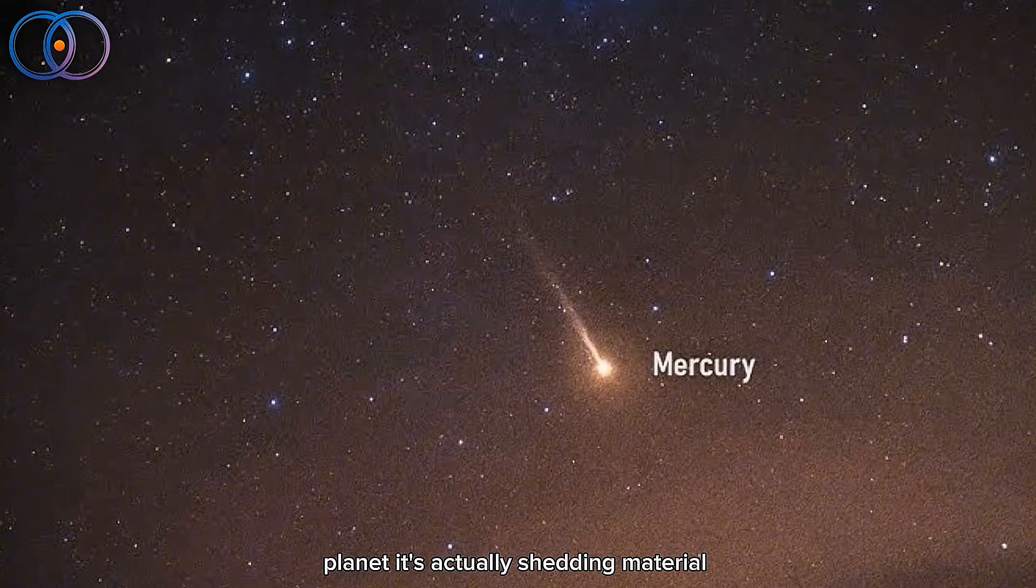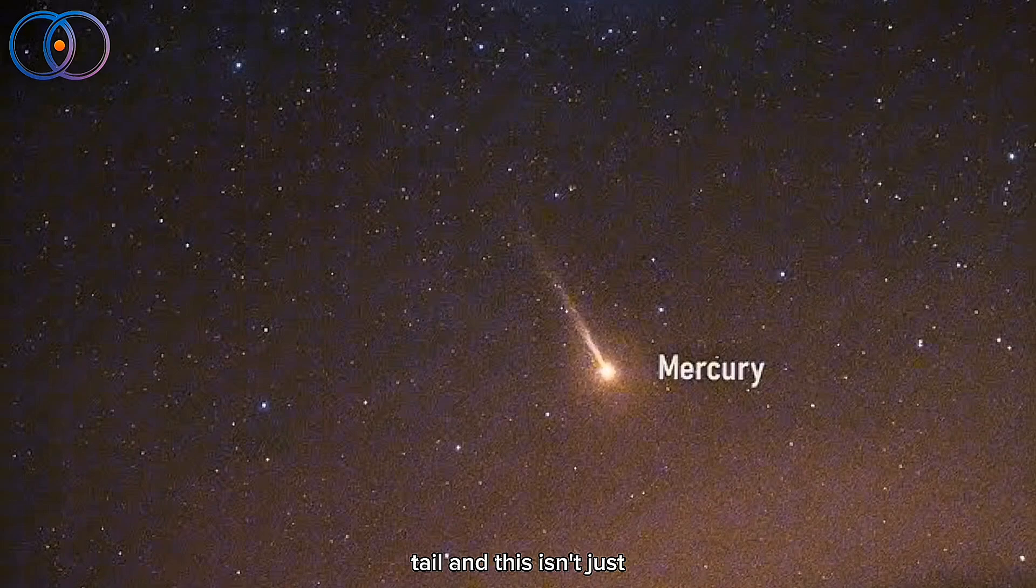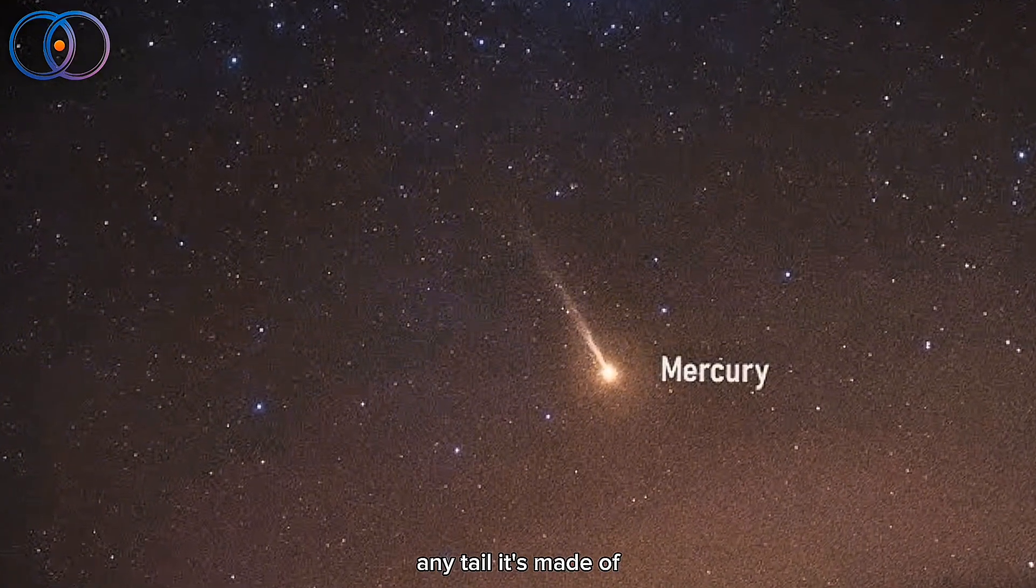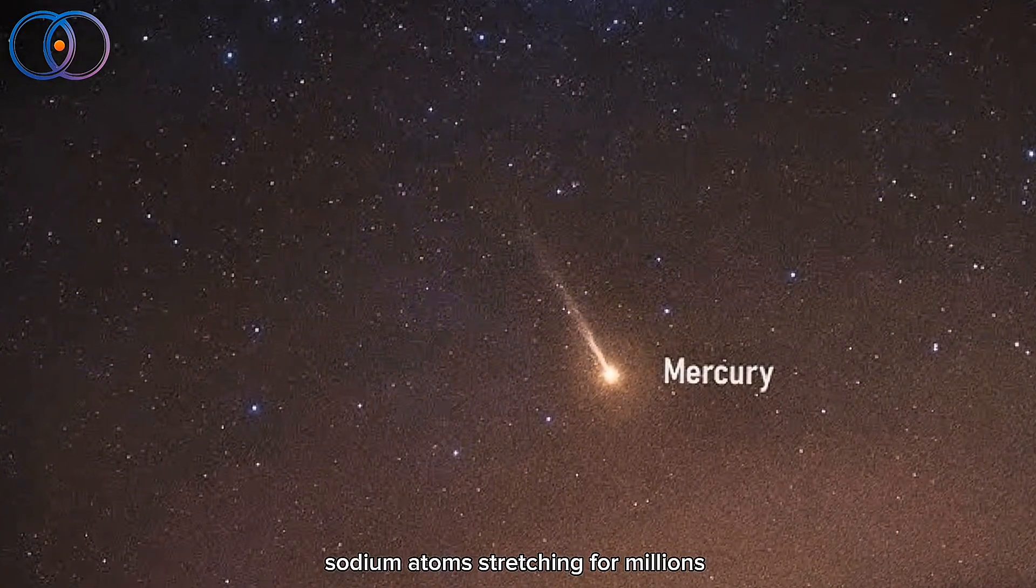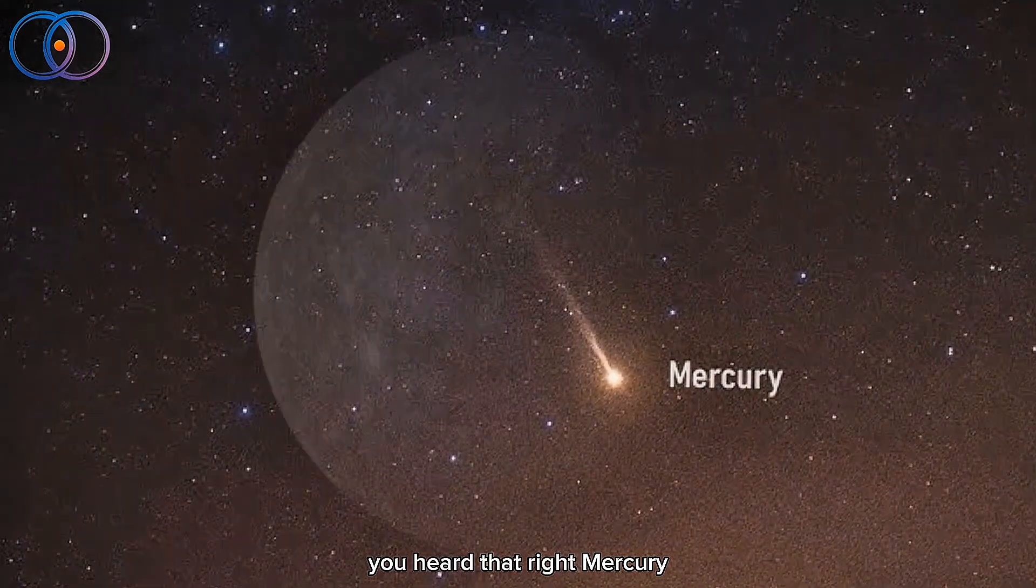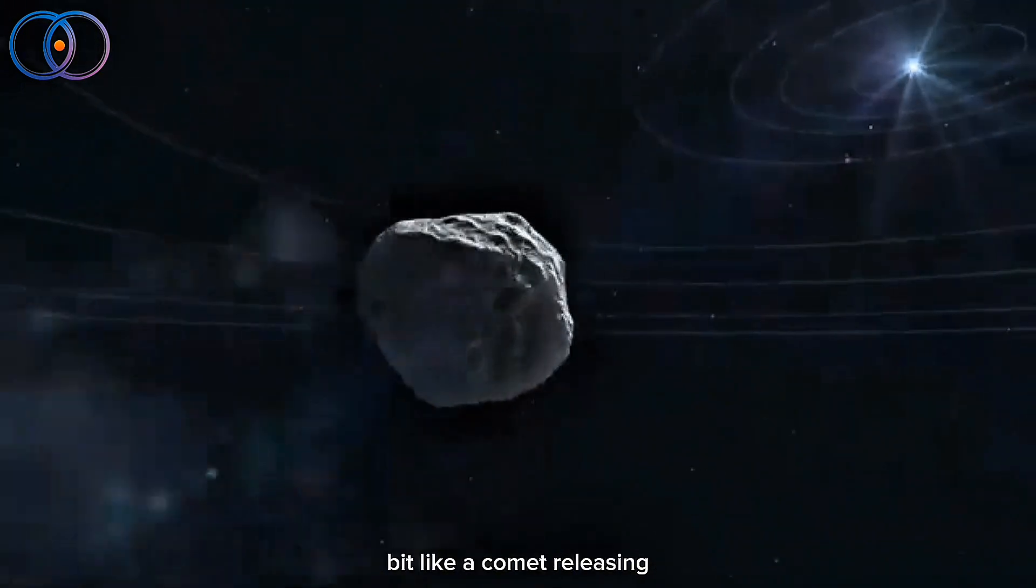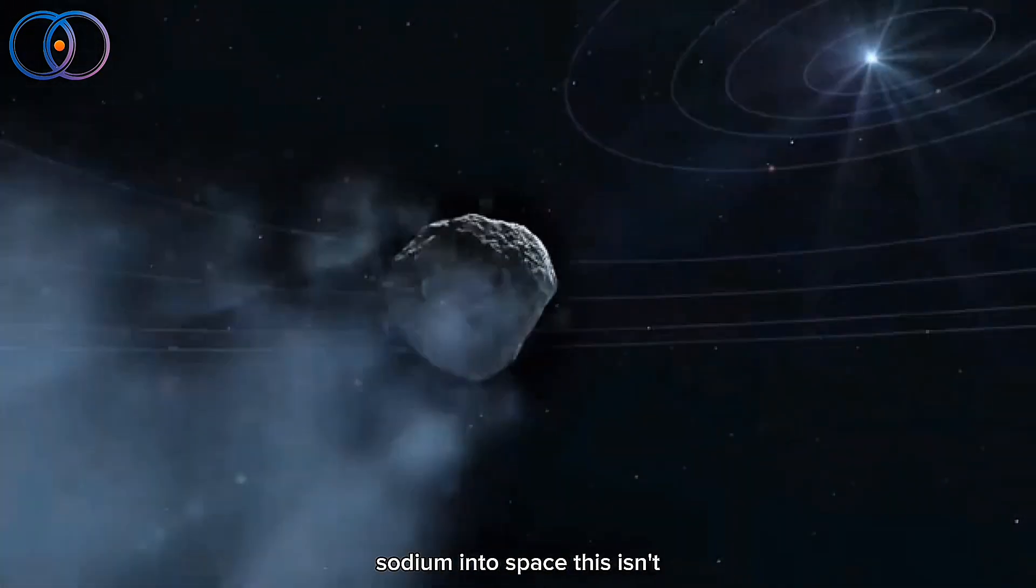It's actually shedding material into space, forming a massive tail. And this isn't just any tail. It's made of sodium atoms, stretching for millions of kilometers behind Mercury. Yes, you heard that right. Mercury, a rocky planet with almost no atmosphere, is acting a bit like a comet, releasing sodium into space.